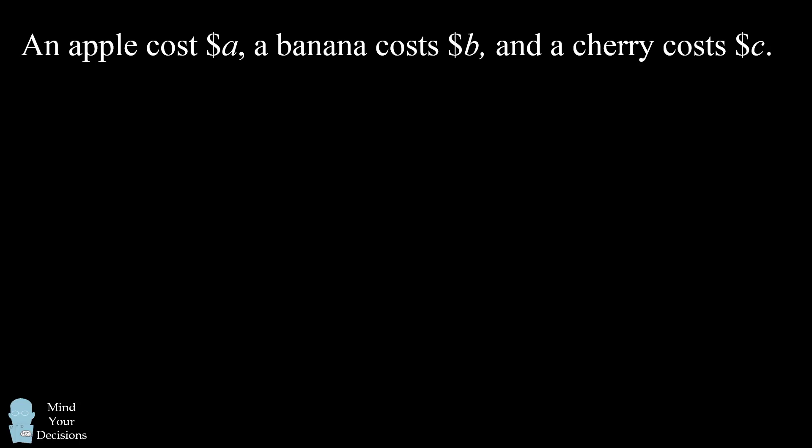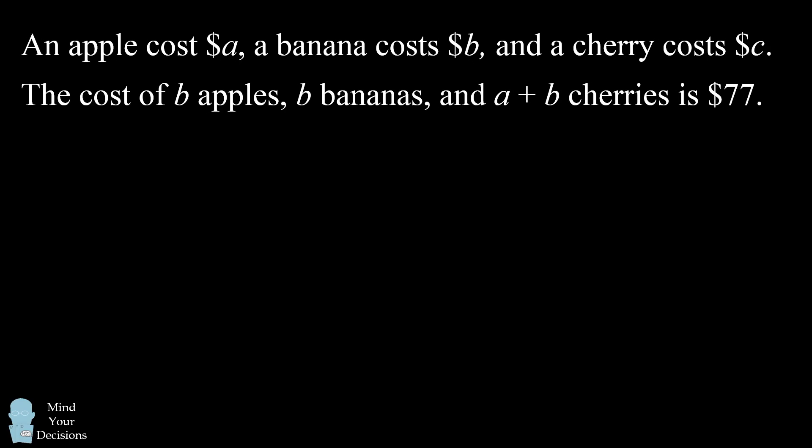Let's translate the given information into a mathematical equation. The total cost will equal the cost of an apple times the number of apples, plus the cost of a banana times the number of bananas, plus the cost of a cherry times the number of cherries.